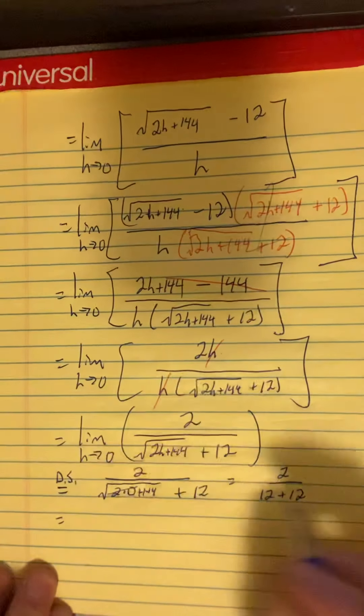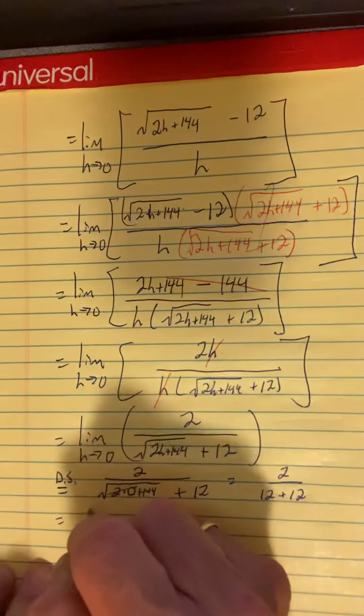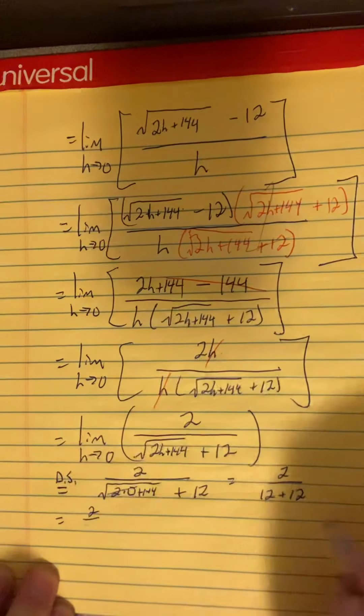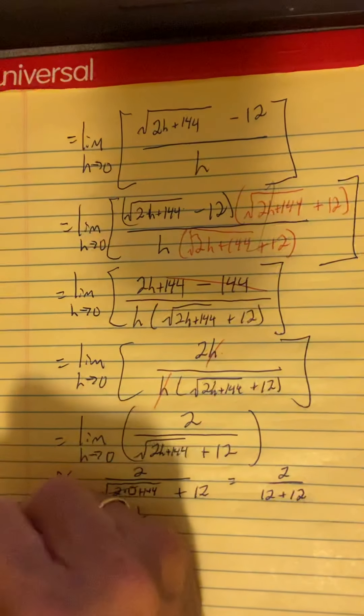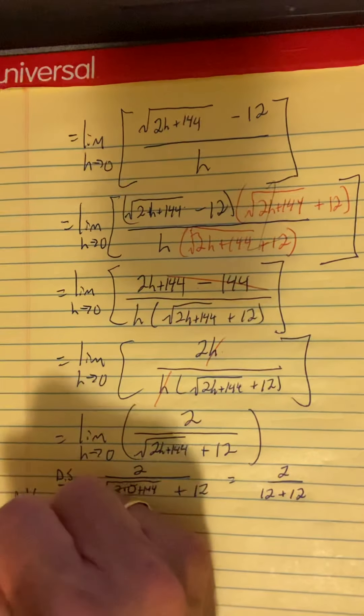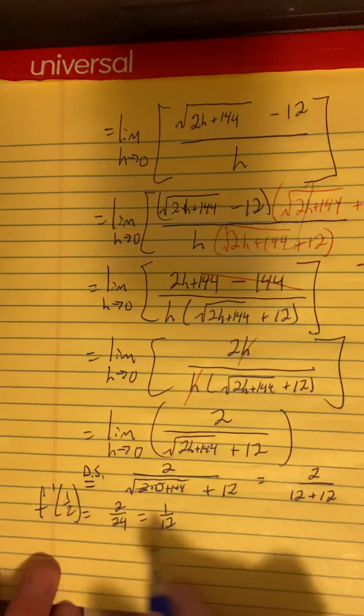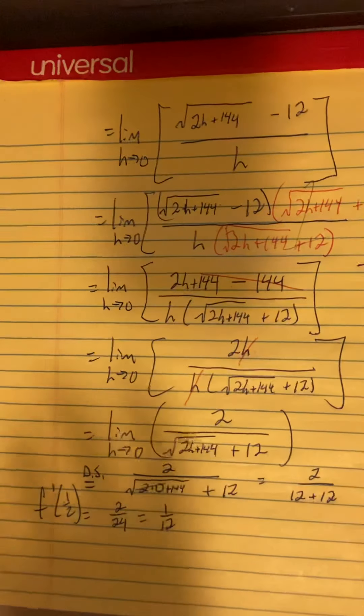So we see that we have 2 over 24 or 2 times 12, whatever you want to write there, which is 1/12. And that is the derivative at a half. The value of the derivative at a half is 1/12. Math made simple and Simpson mad.